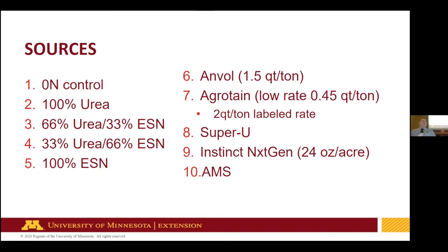The reason for using the low Agrotain rate is because of SuperU. SuperU is a combination of DCD and NBPT, and the rate in SuperU is lower — close to about 0.45 quarts per ton. So I'm trying to use the Agrotain rate to separate out: if we see a response to SuperU, is it the Agrotain or is it the DCD? Then Instinct Next Gen at 24 ounces per acre. One thing about Instinct that makes it different is that it is a labeled pesticide, but there is a supplemental label for root crops, so beets are included. It's applied based on a rate per acre rather than per ton. The last one is ammonium sulfate — I wanted an ammonium source, which should have lower volatility potential than urea itself.